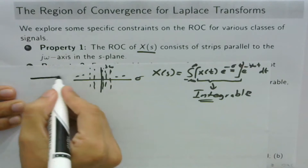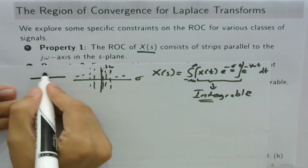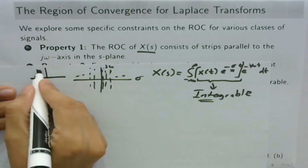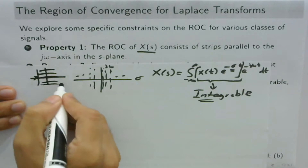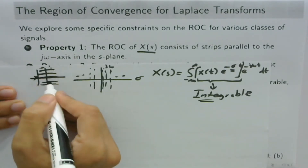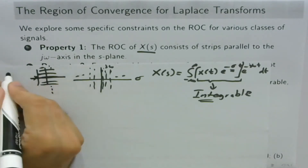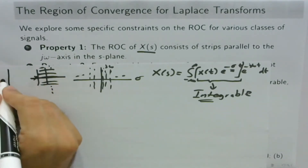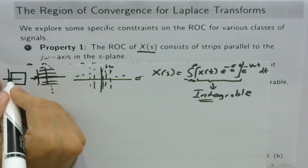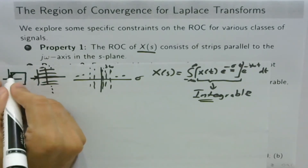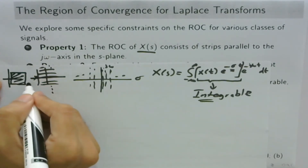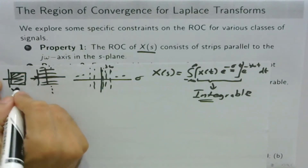In the S-plane, we can have a pole at a certain location — but a region of convergence that is not parallel to the jω axis is not possible.